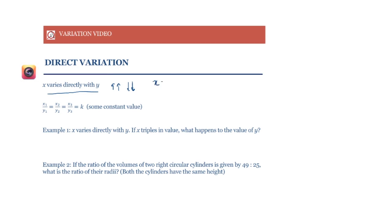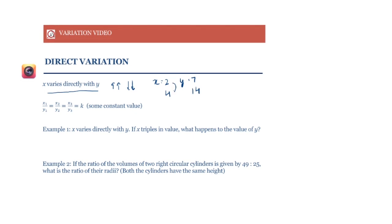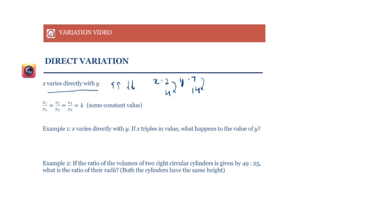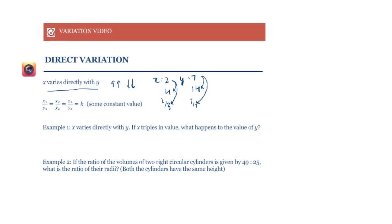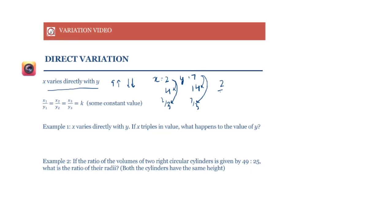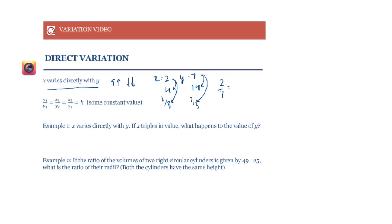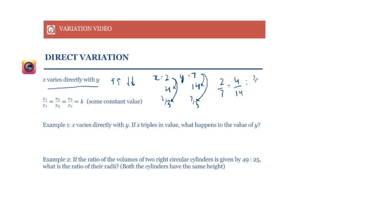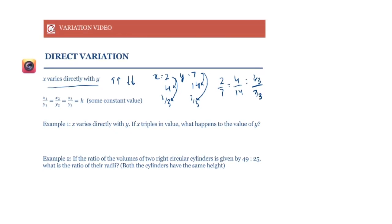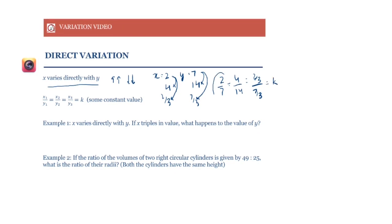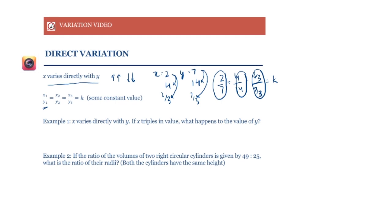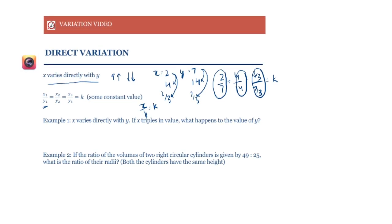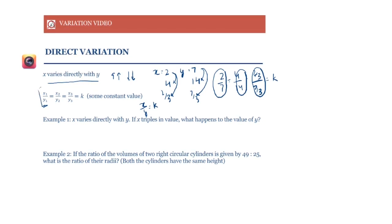For example, if X is 2 and Y is 7, when X becomes 4, Y becomes 14 — so when X doubles, Y also doubles. When X decreases to 2/3, Y also decreases to 7/3. Essentially, the ratio X/Y stays the same: 2/7 = 4/14 = (2/3)/(7/3) = k, a constant. We write this as X/Y = k, or across multiple instances, X1/Y1 = X2/Y2.